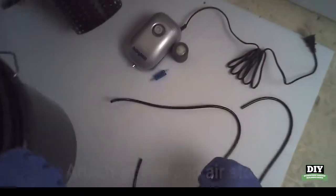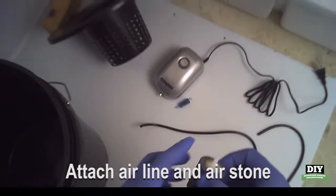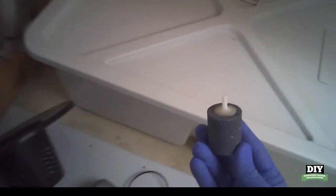Connect the 30 inch piece of airline to the air stone and place the air stone in the five gallon bucket.